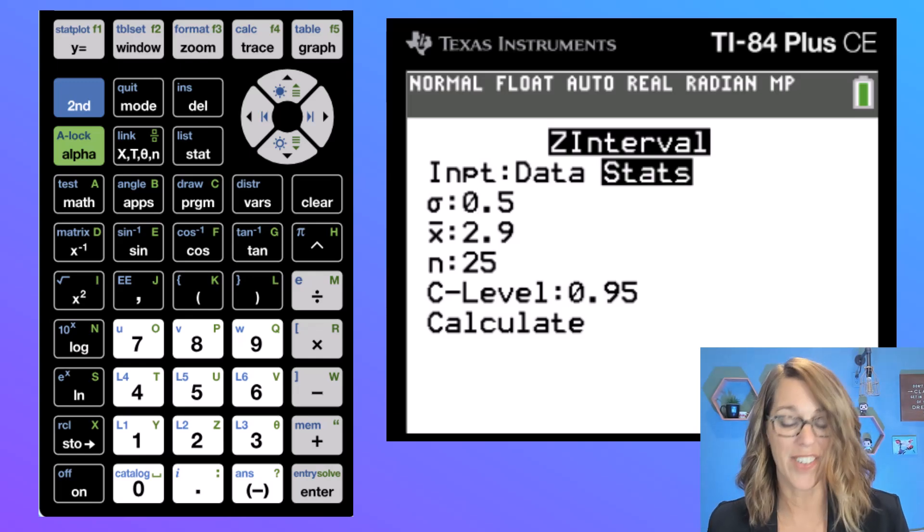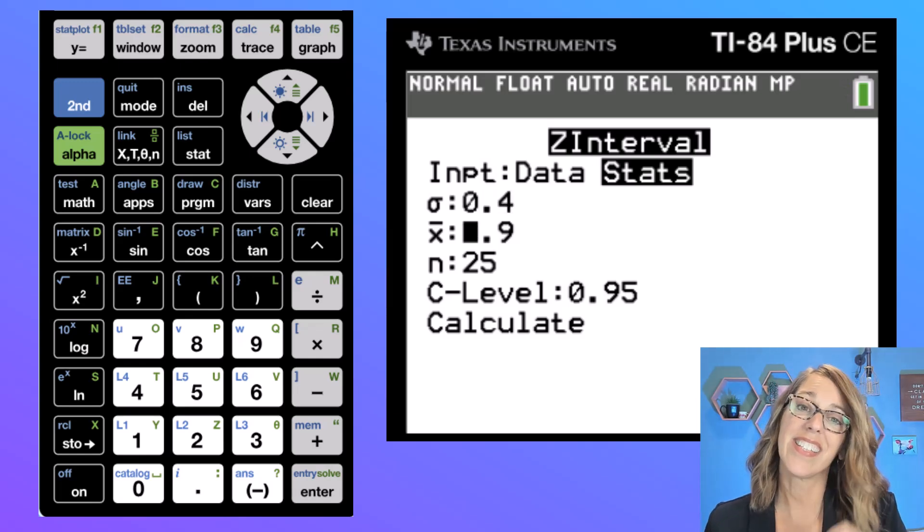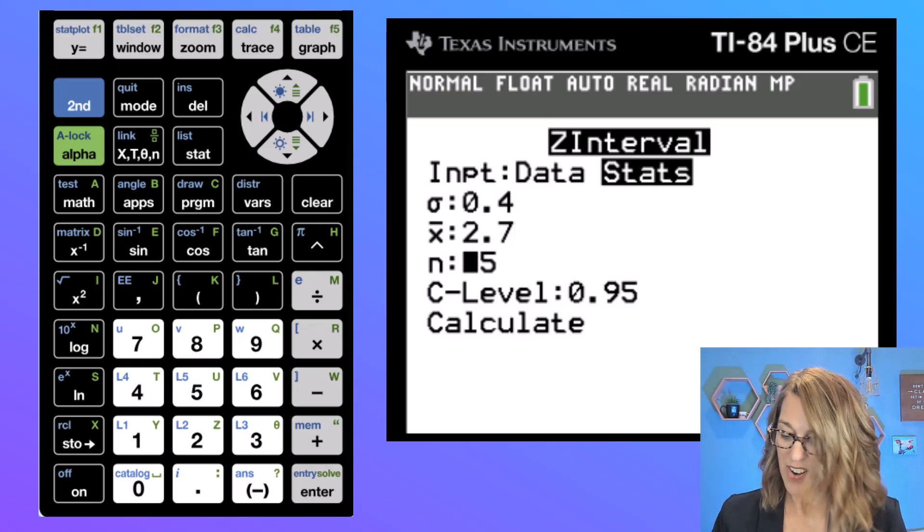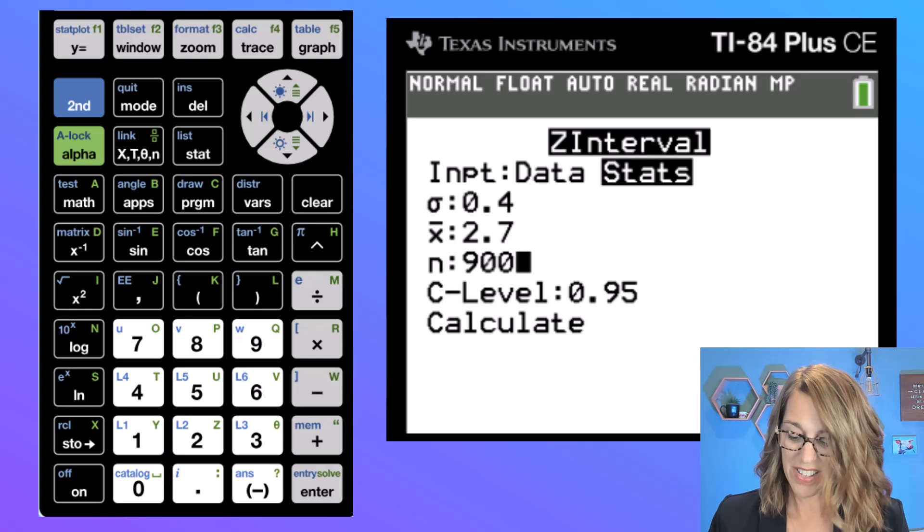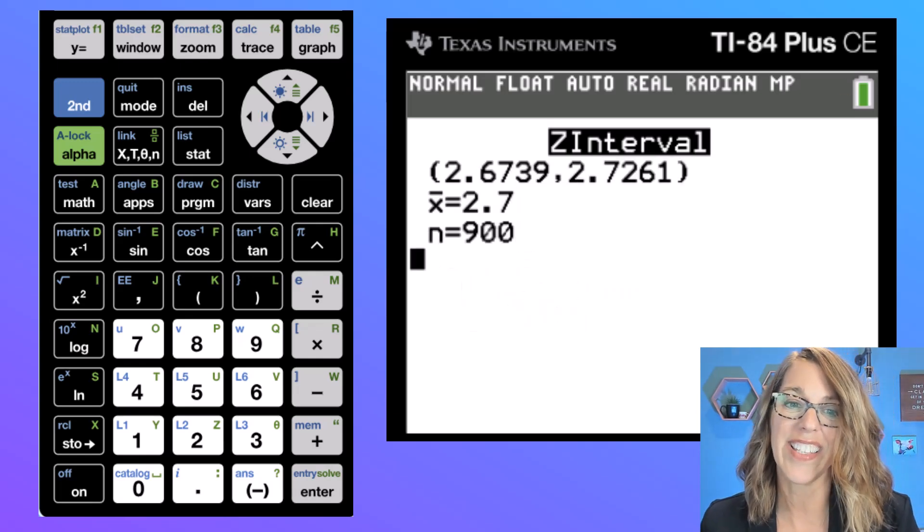I've got a population standard deviation of 0.4. I'm just going to type right over what I had there. A sample mean GPA of 2.7 and a sample size here of 900. That confidence level is 95%. So I'll go ahead and calculate that one.